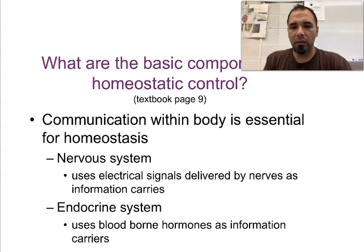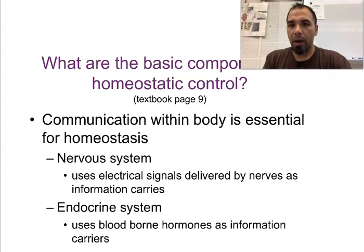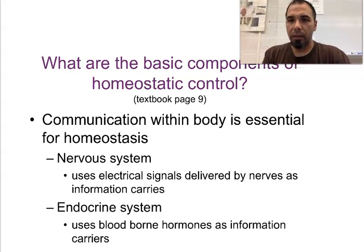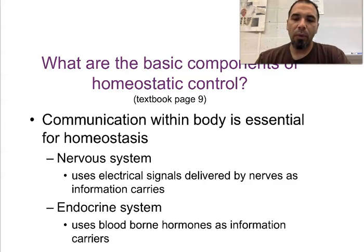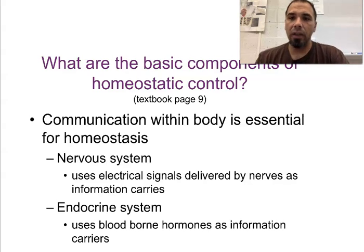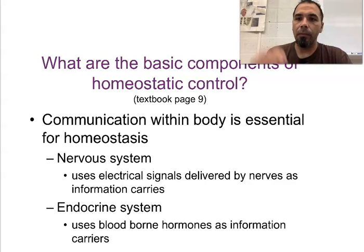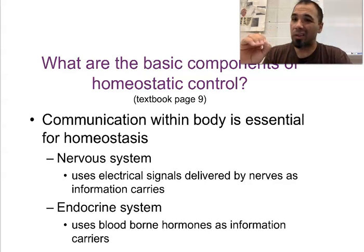What are the components? Nervous system and endocrine system are the main components of your homeostatic control. Communication with the body is essential. Nervous system is fast-acting. Endocrine is slow.